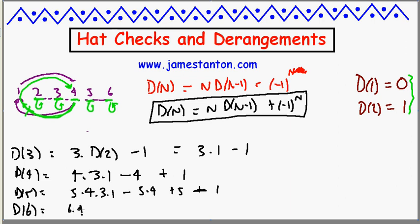D of 6 is going to be 6 times all that, 6 times 5 times 4 times 3 times 1 minus 6 times 5 times 4 plus 6 times 5 minus 6 plus minus one to the sixth plus one.